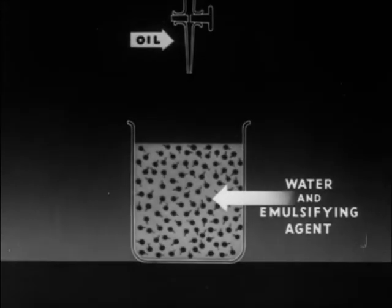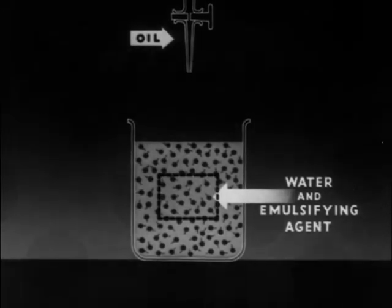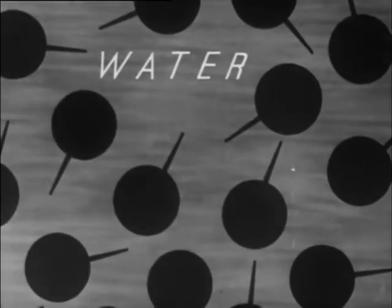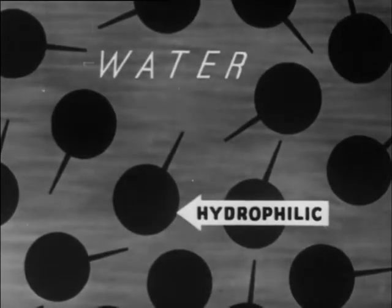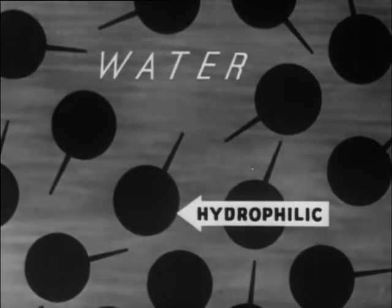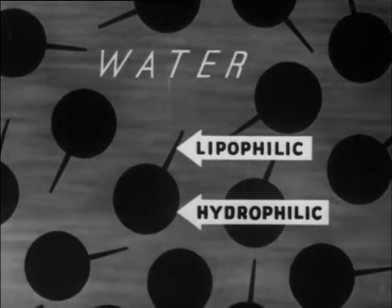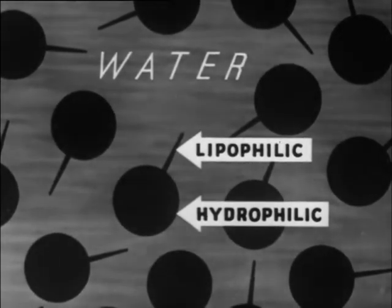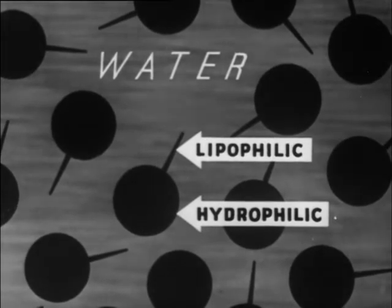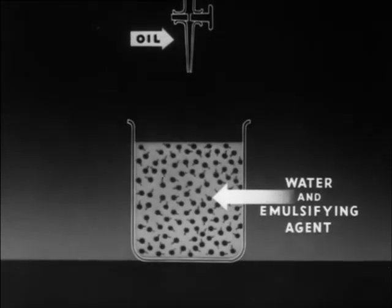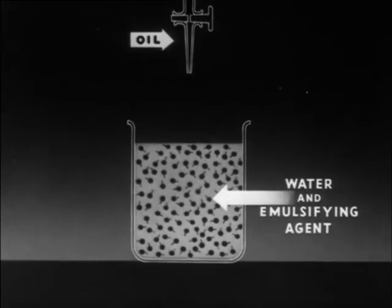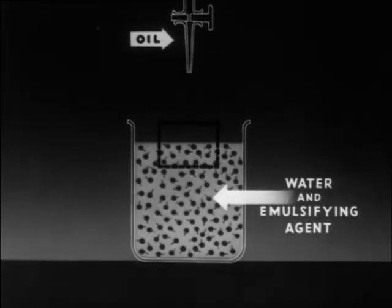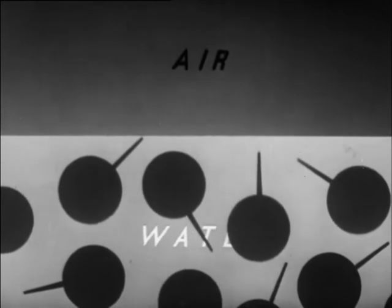The emulsifying agent must also produce a suitable new film around the globules. Emulsifying agents achieve their effect by combining in their molecules a water seeking or hydrophilic portion and an oil seeking or lipophilic portion. This portion has an aversion for water and is thus hydrophobic as well. When such an agent is dissolved in water, the molecules tend to crowd to the surface and arrange themselves with the hydrophobic ends sticking out.